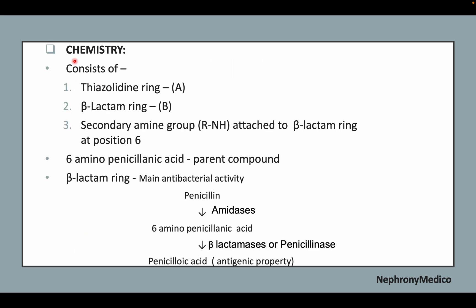Regarding chemistry, penicillin consists of a thiazolidine ring, a beta-lactam ring, and a secondary amine group attached to the beta-lactam ring at position 6. The 6-aminopenicillanic acid is the parent compound, and the beta-lactam ring is responsible for the main antibacterial activity.